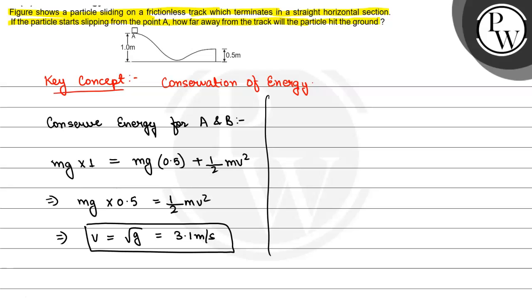Now after B, this particle will show projectile motion. For projectile motion, theta will be equal to 0 degrees and y will be equal to minus 0.5 meters.